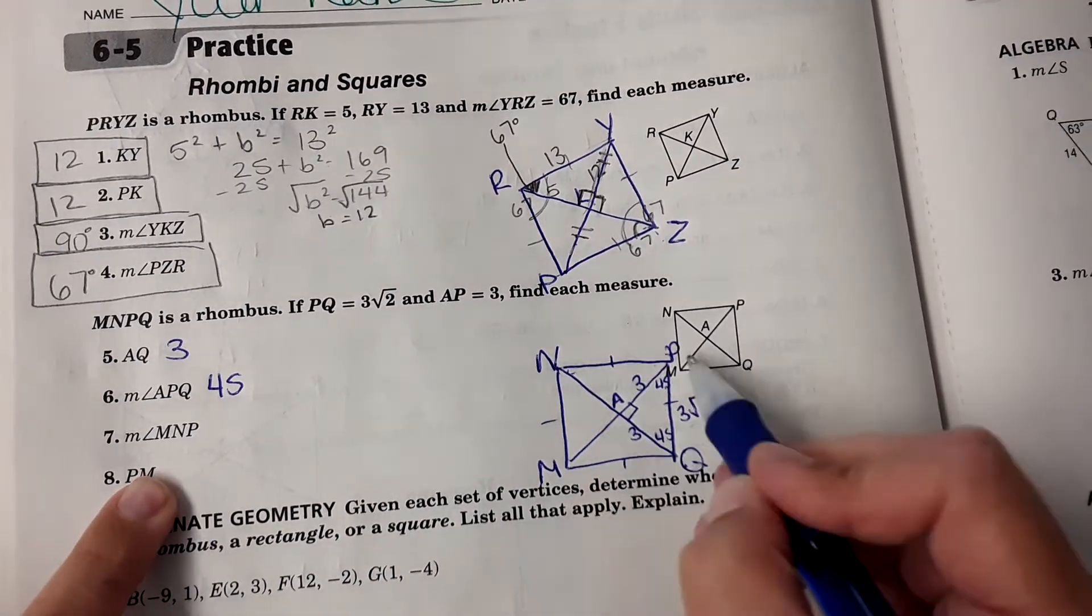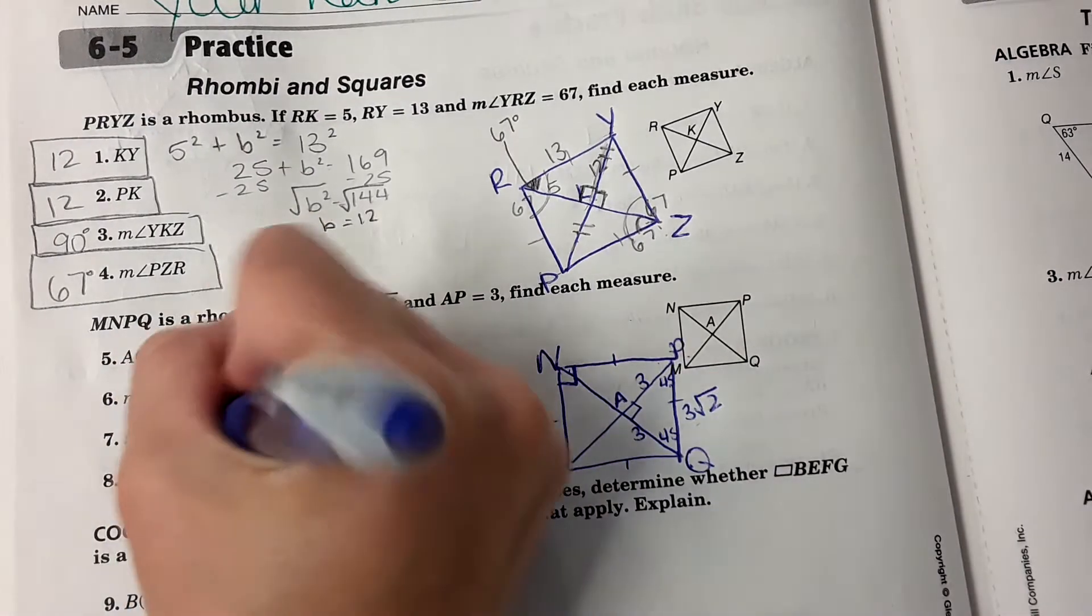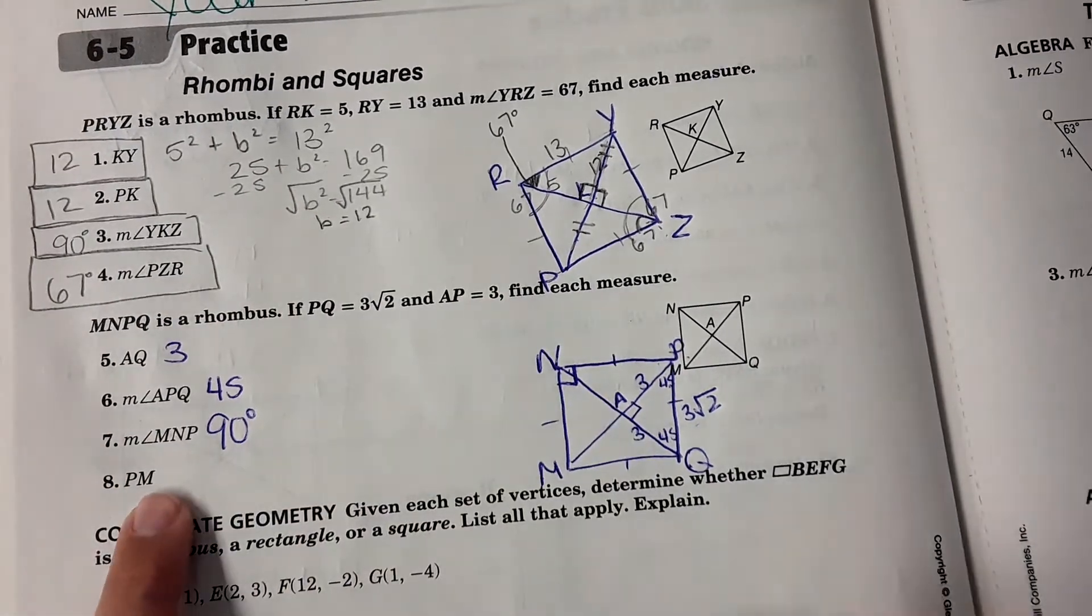And then M, N, P. Well, if it's a square, then this has to be 90 degrees.